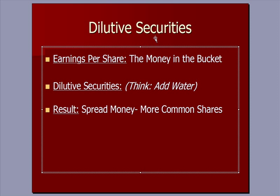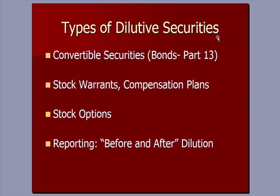Now let's talk about the types of dilutive securities. One of them is convertible bonds — bonds that can be converted into common stock, which we discussed in video 13. We also have stock warrants and compensation plans we'll see in a later video, and finally stock options that we're going to see in a minute. With all of these, we report to shareholders two types of earnings per share: one is EPS as things stand now with the current amount of common stock outstanding — the before picture — and the after picture is EPS assuming all these securities are converted into common stock, which we call fully diluted earnings per share. It's a what-if scenario: what if everything that could be converted into common stock was converted? That would spread the same dollar amount of earnings over a much wider amount of common stock.